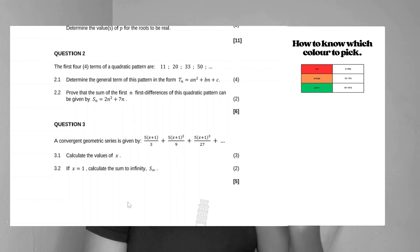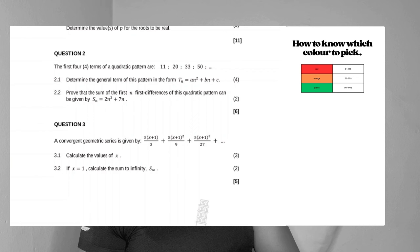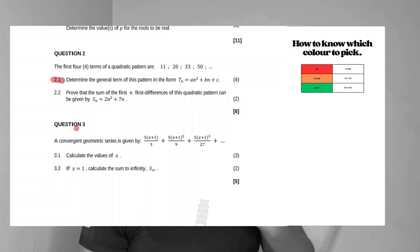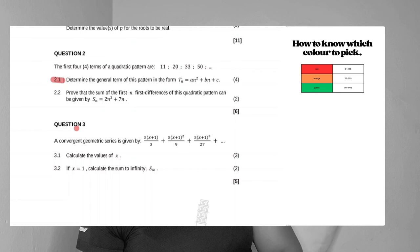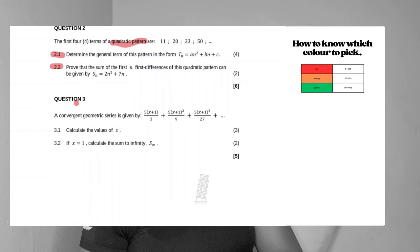Let's say for question two — quadratic number pattern — you do the question and find that you don't understand how to find the general term. Highlight that question in red, because red represents 'I do not know this.' That will automatically affect the next question too. If you also don't get that, it means that for quadratic patterns under sequences and series, you don't understand them.